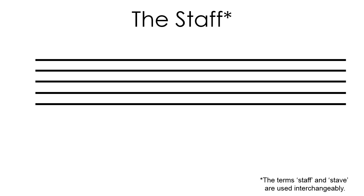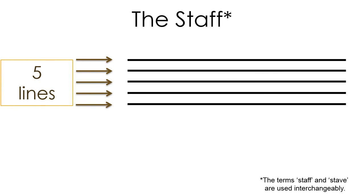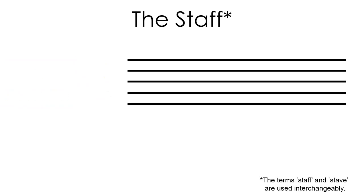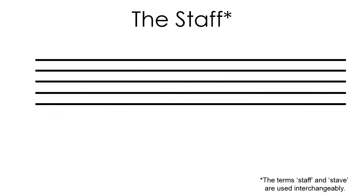This video explains the concept of reading on the grandstaff through landmark notes. In music notation, the staff provides a visual representation of pitch. A staff, or stave, consists of five lines and four spaces. Each line or space corresponds to a different musical pitch.